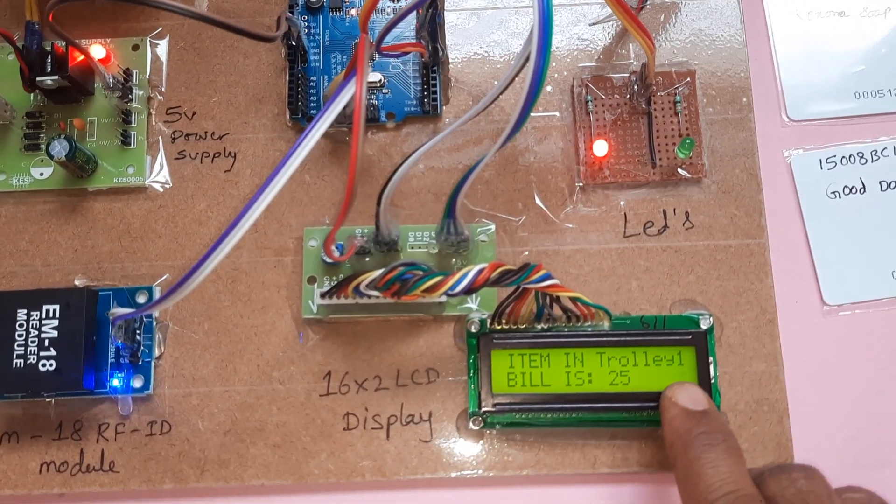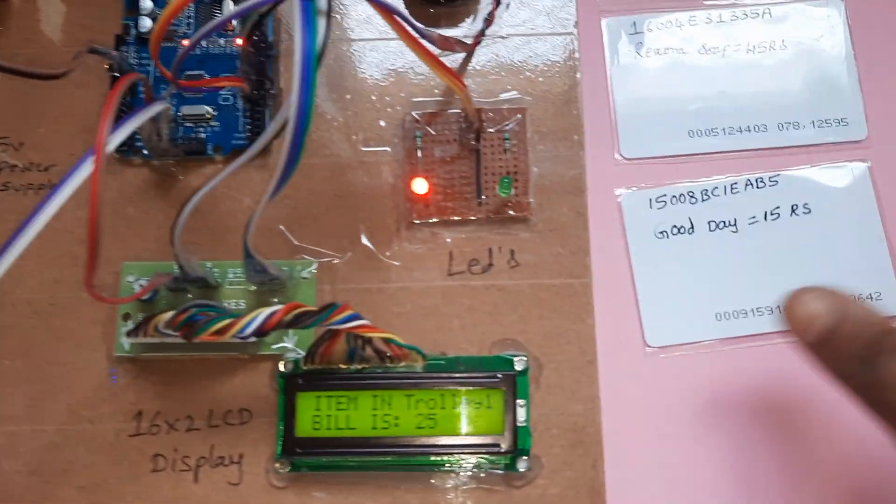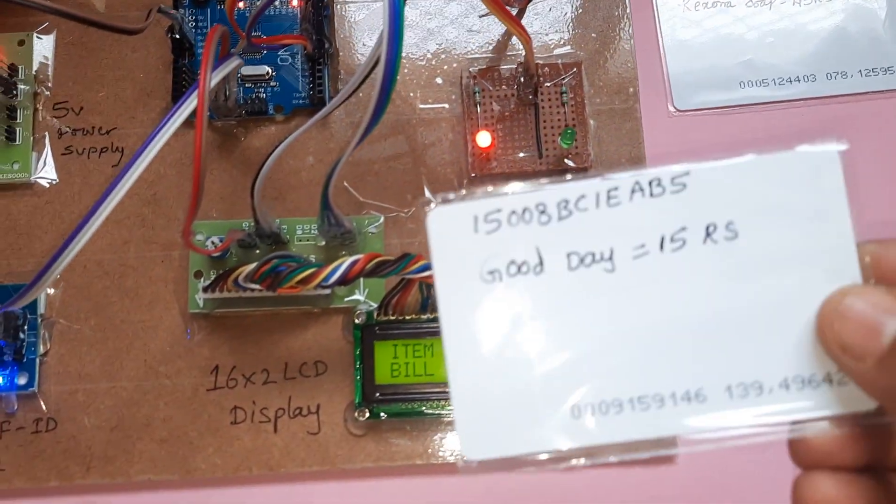One item is added, bill is 25. Lux soap, 25 rupees. Now I'm going for Good Day biscuit, cost is 15 rupees.